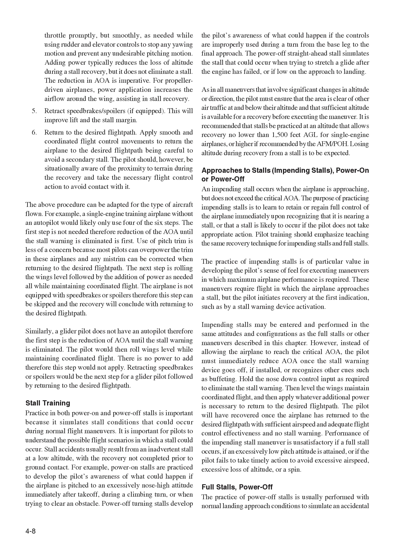It is recommended that stalls be practiced at an altitude that allows recovery no lower than 1,500 feet AGL for single-engine airplanes, or higher if recommended by the AFM/POH. Losing altitude during recovery from a stall is to be expected. An impending stall occurs when the airplane is approaching but does not exceed the critical AOA. The purpose of practicing impending stalls is to learn to retain or regain full control of the airplane immediately upon recognizing that it is nearing a stall. These maneuvers require flight in which the airplane approaches a stall, but the pilot initiates recovery at the first indication, such as stall warning device activation.